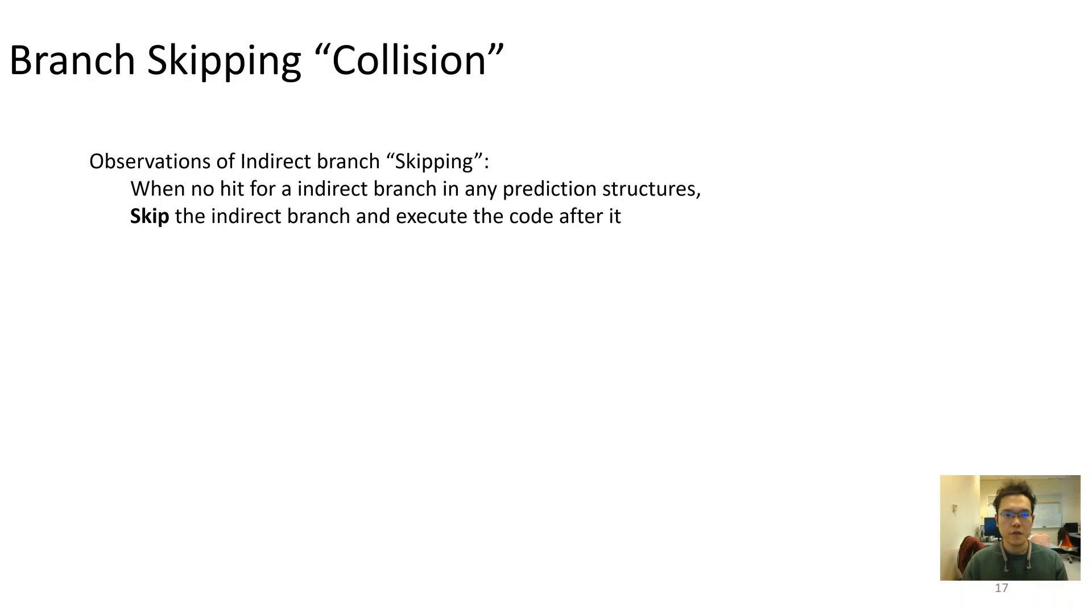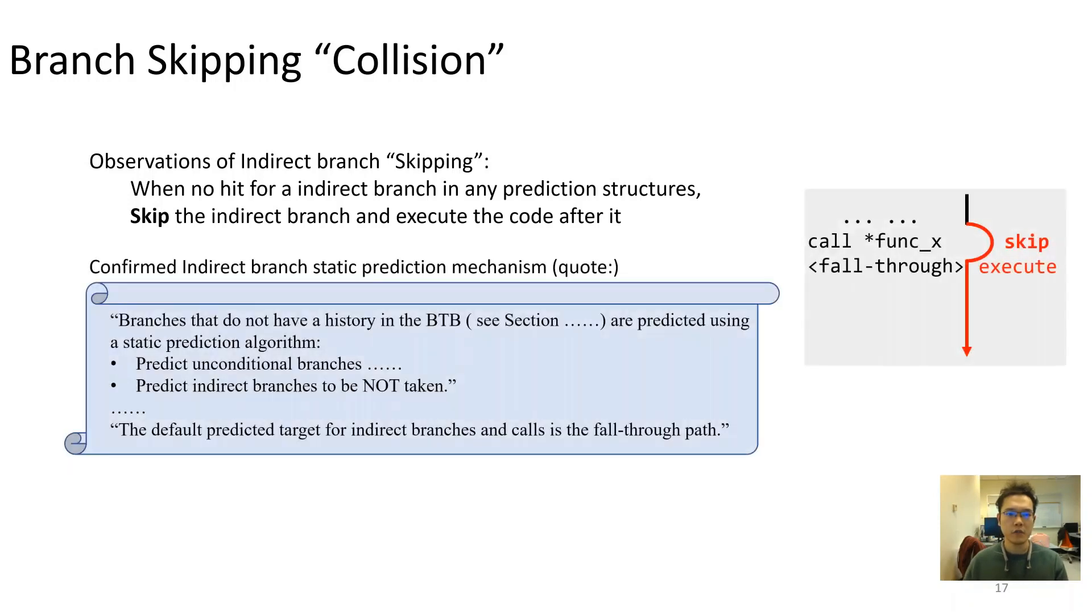During tests, we also noticed that a transient execution could happen at a place right after an indirect branch. Although the situation is rare, we confirmed such skipping behavior on a selection of CPUs. With the public information such as manufacturer documentation and patents, we're able to link this observation with a static prediction mechanism for indirect branch prediction.